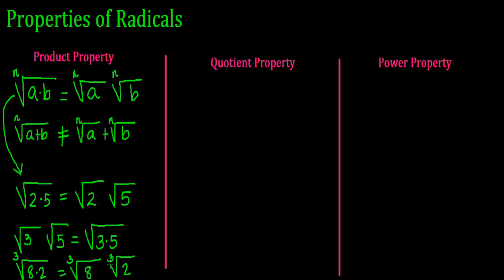And it works backwards also. Any root — that's what n means. The quotient property is very similar to the product property. The quotient property says if I have the root, any root,